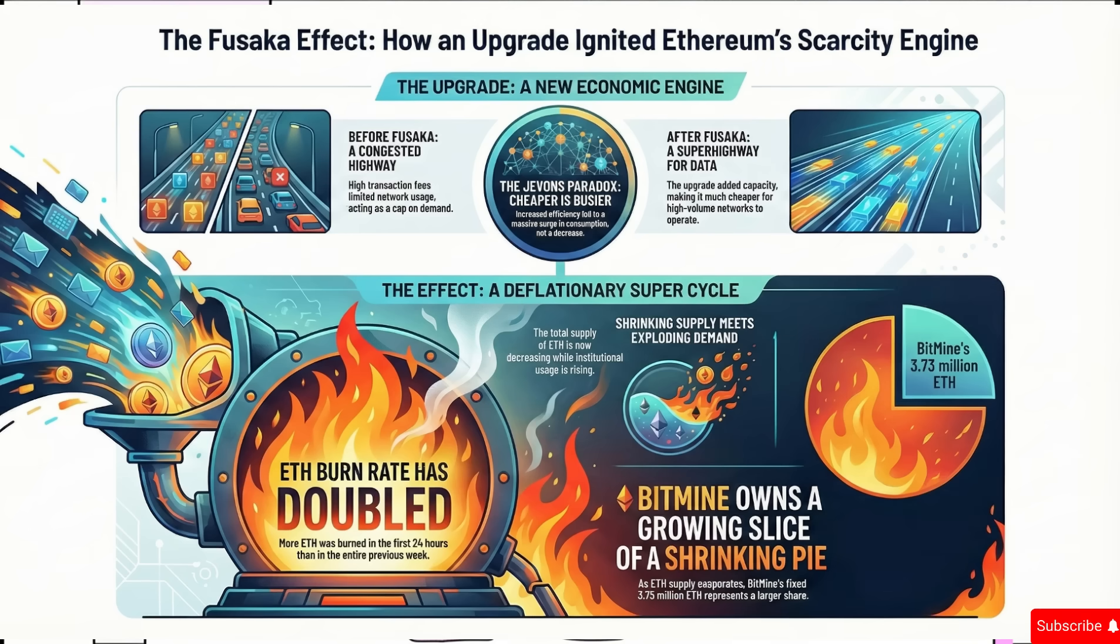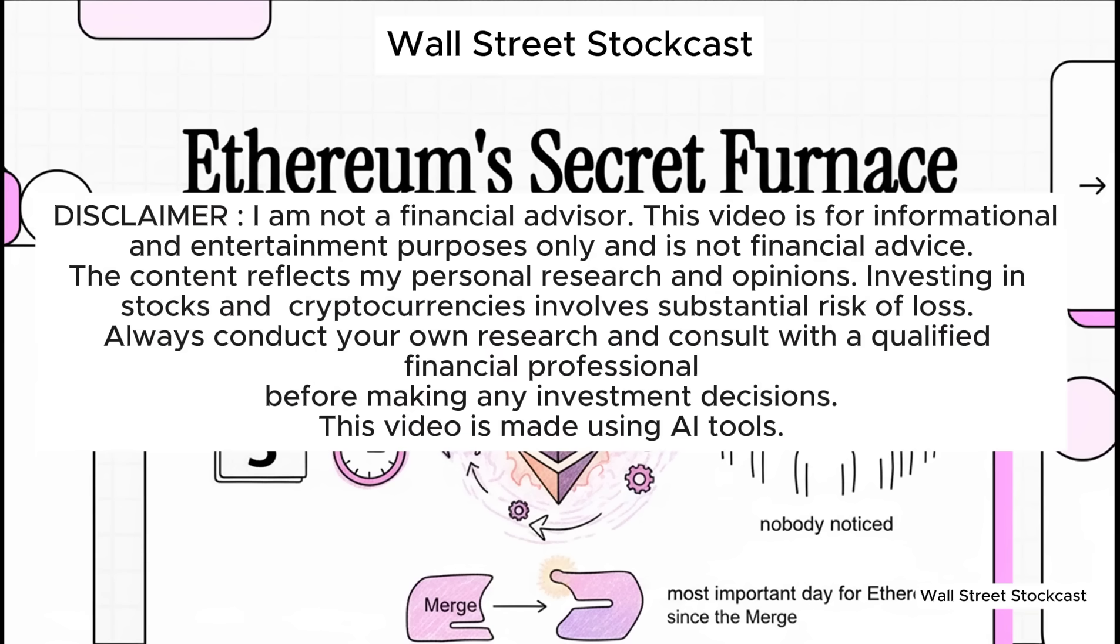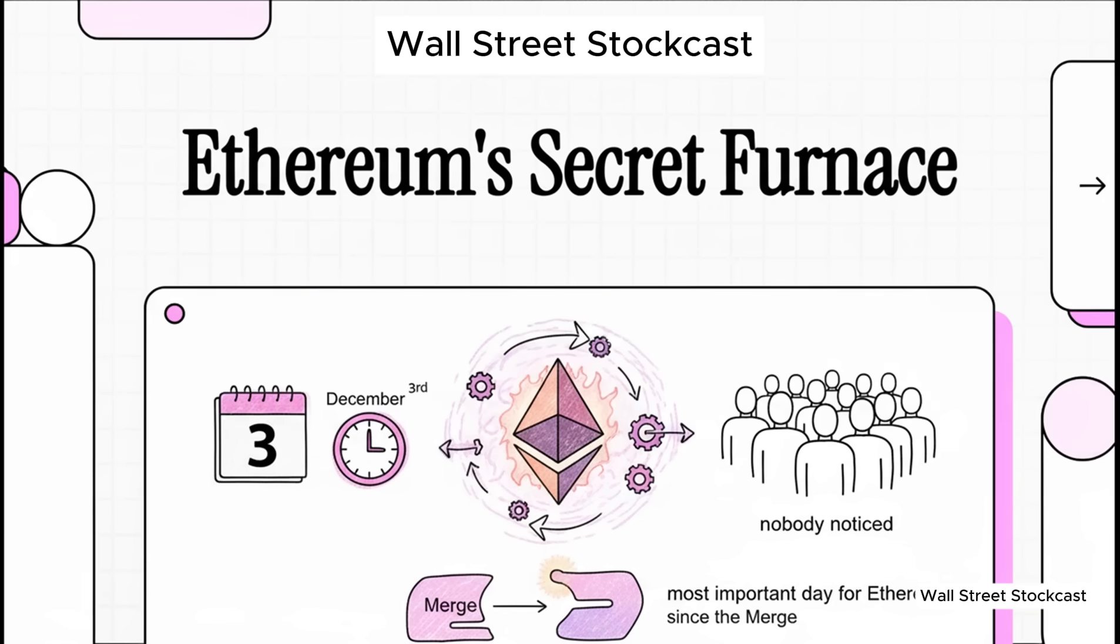Alright, let's jump right into this. Something happened on December 3rd. It was an event that quietly, almost secretly, changed the fundamental laws of physics for the entire crypto economy. And the crazy part? Almost nobody even noticed. So today, we're going to unpack a thesis that claims this was the single most important day for Ethereum since the merge.